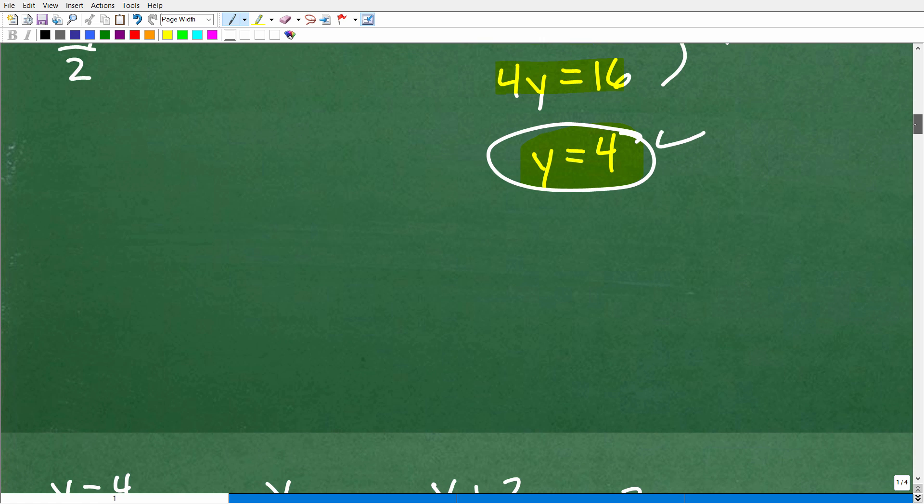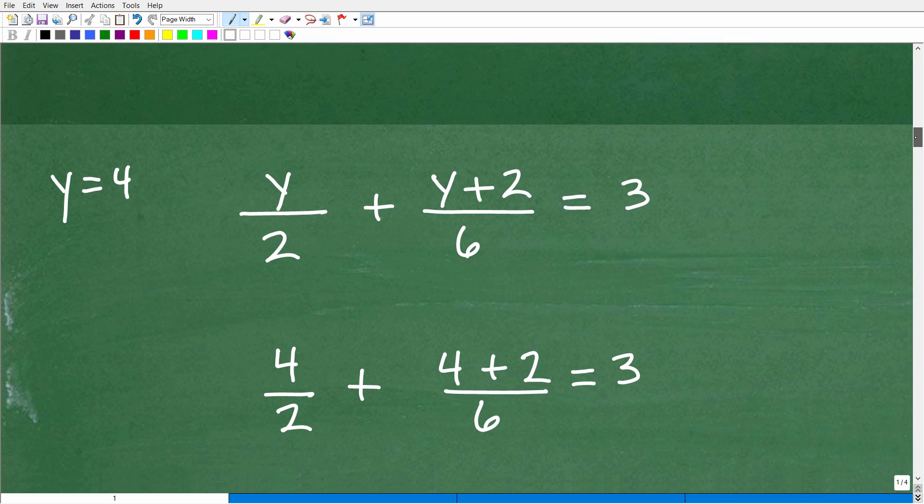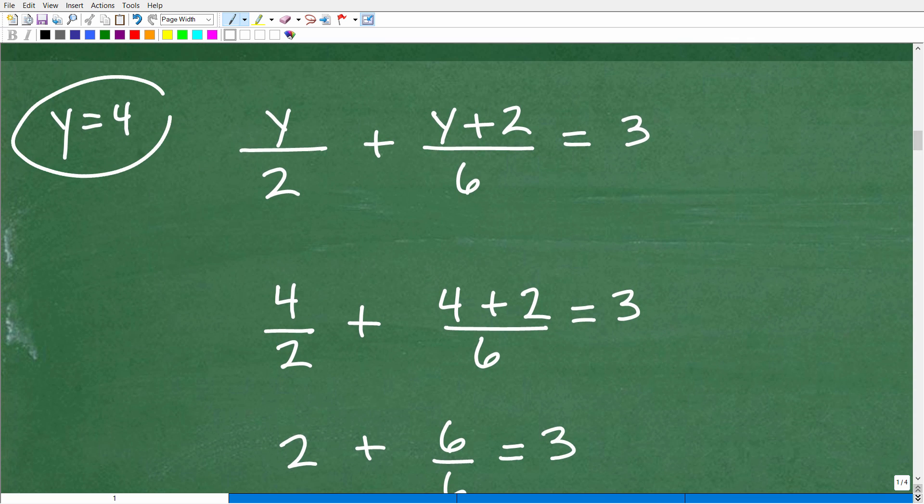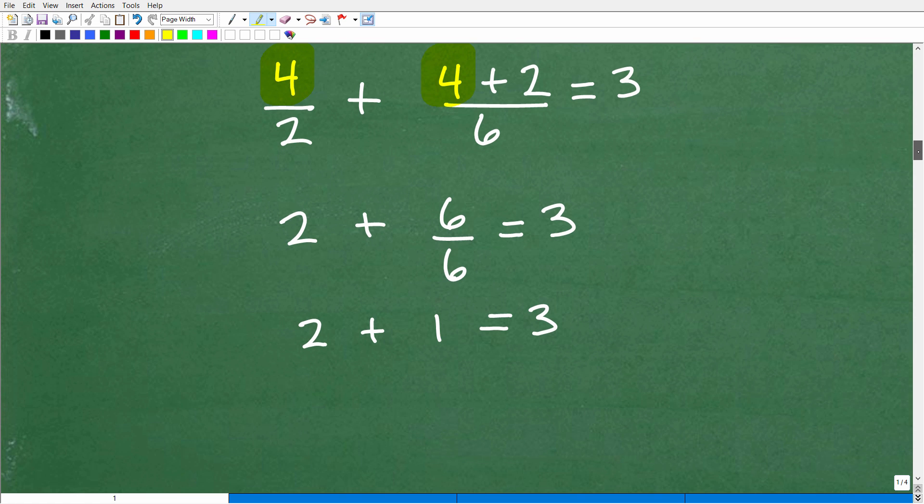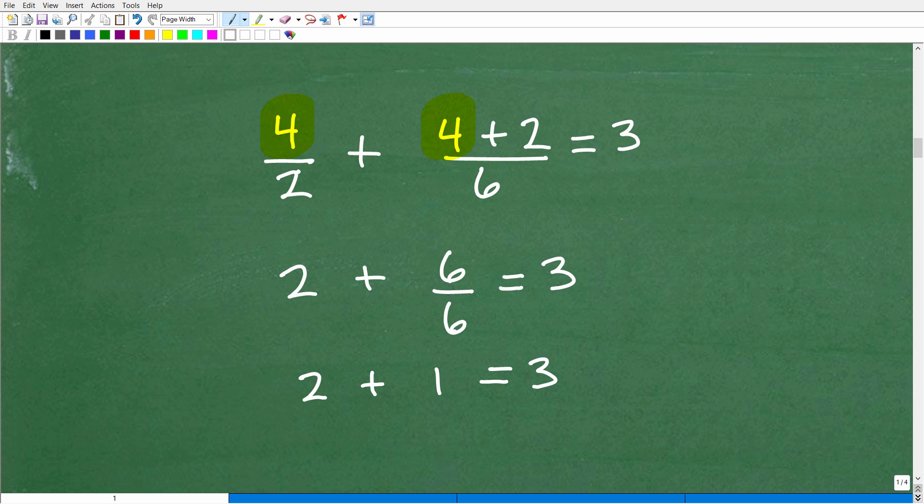And just to kind of double check ourself, if y = 4, let's go down here to our original equation. We're saying that y was equal to four is the solution. So if I replace this y with a four and this y with a four, let's see what happens. So we'll replace this y with a four. Then we're saying that's the solution. And this y we'll replace with a four. And now let's see if the left-hand side equals the right-hand side. So four divided by two is two. Four plus two is obviously six. So we have 6/6 right here. And we're going to see if that's going to be equal to three. Well, this is two. Six divided by six is one. Two plus one. Last time I checked, it was in fact three.